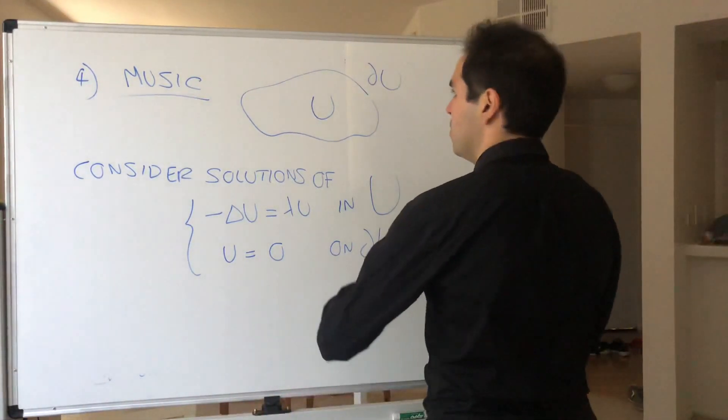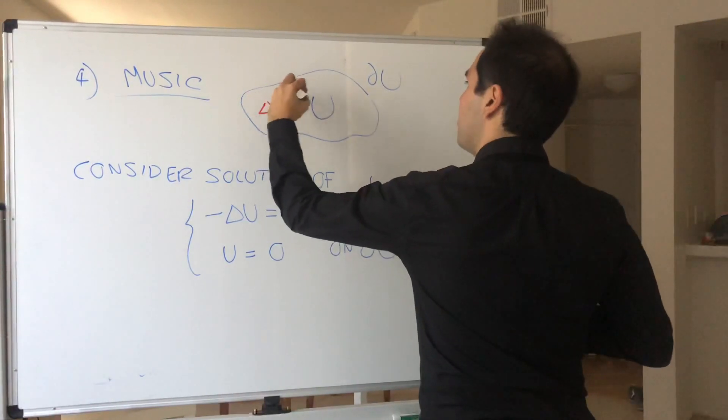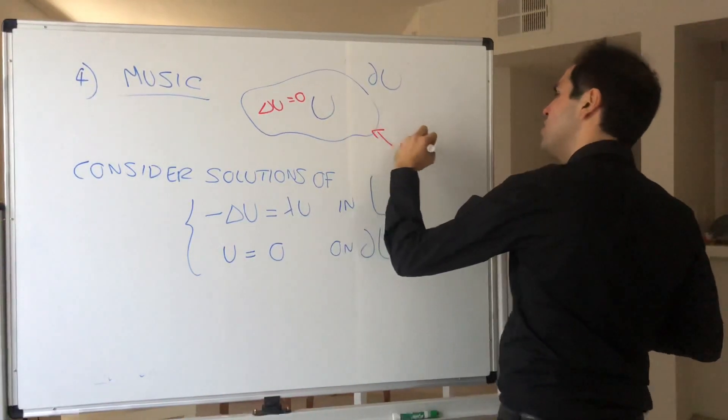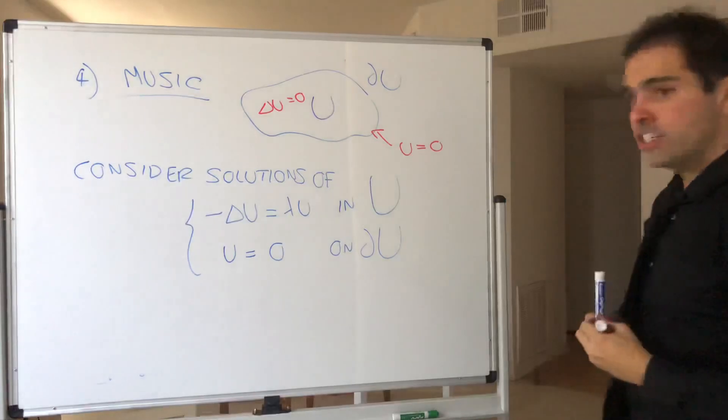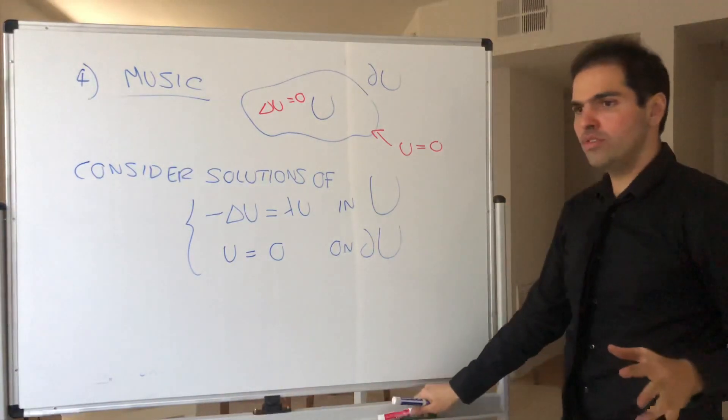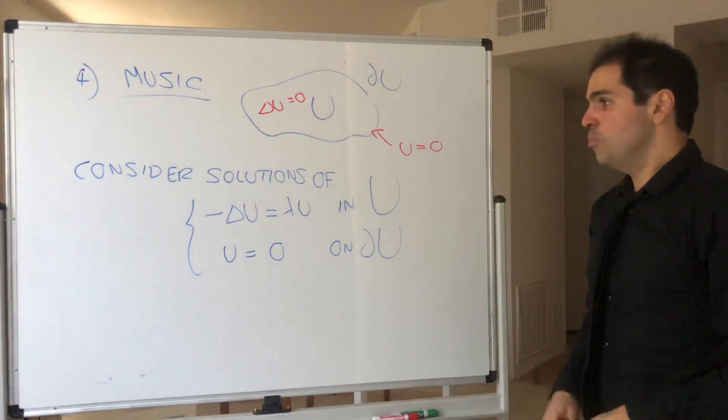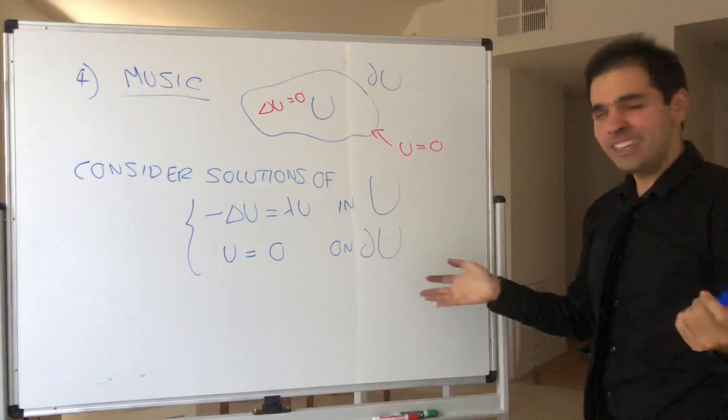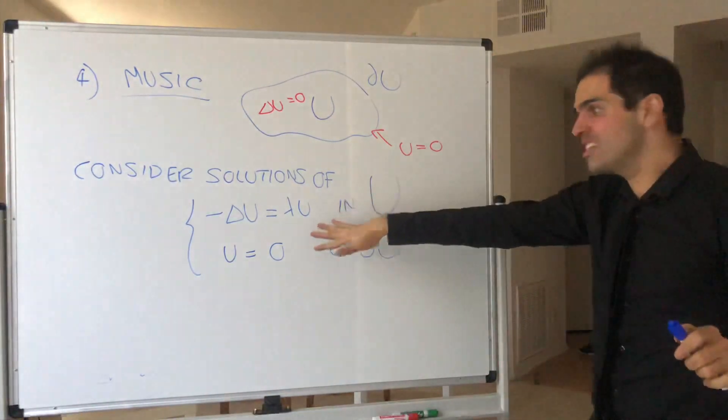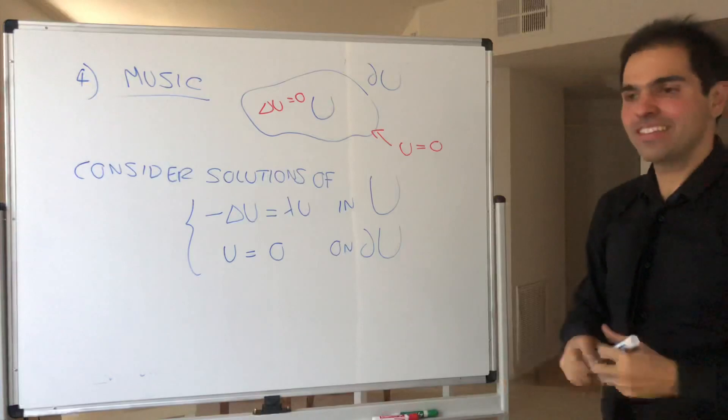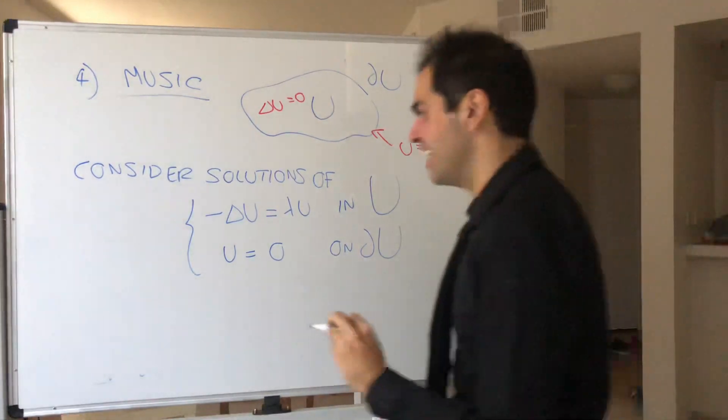So again, we know the Laplacian is zero, and we know u equals zero here. The question is, when are there non-trivial solutions? Well, most of the time there aren't, except for a special sequence of lambdas, which is called a sequence of eigenvalues.